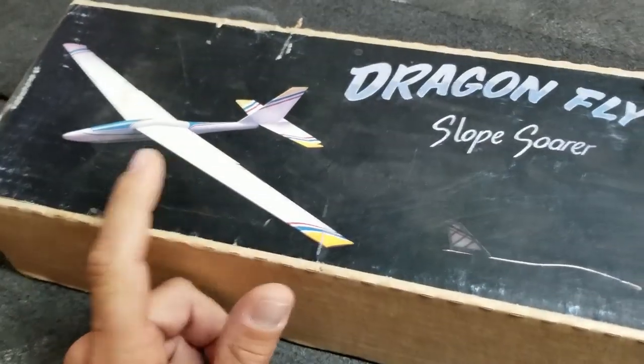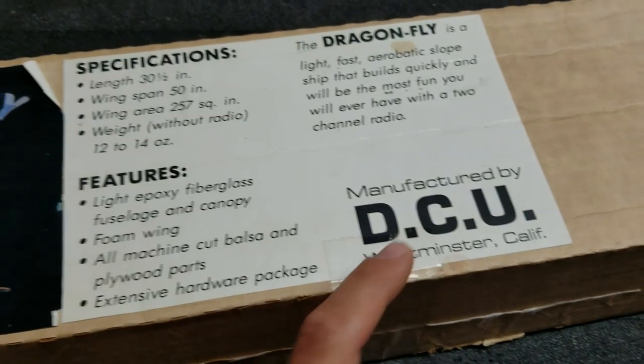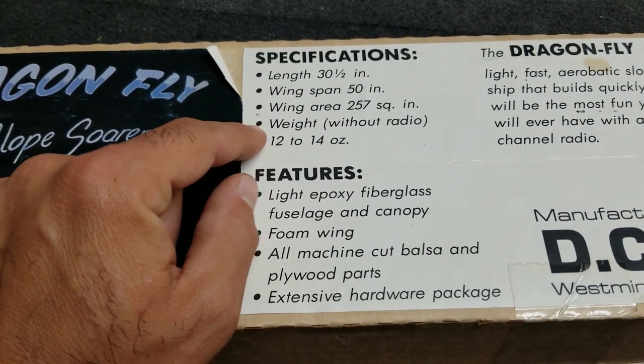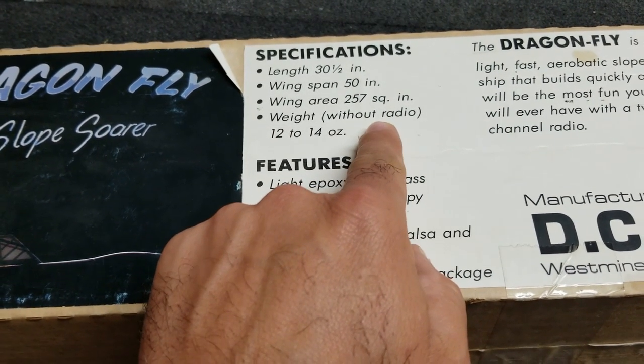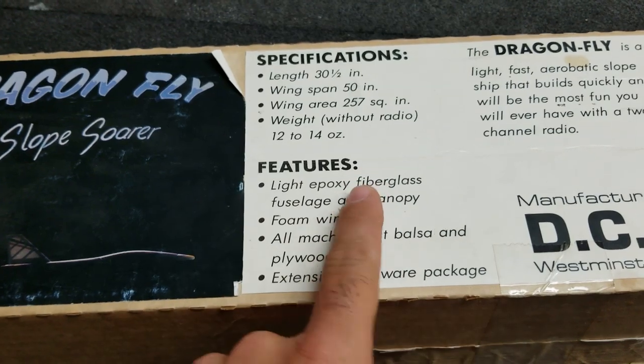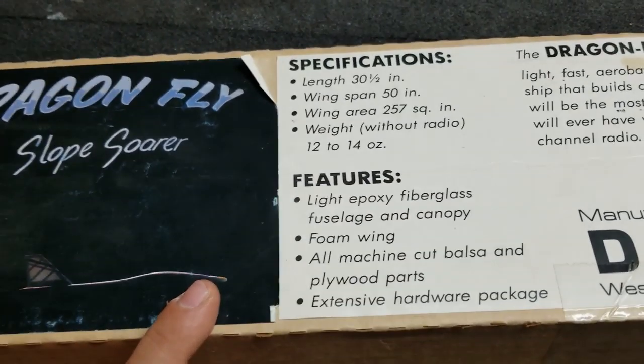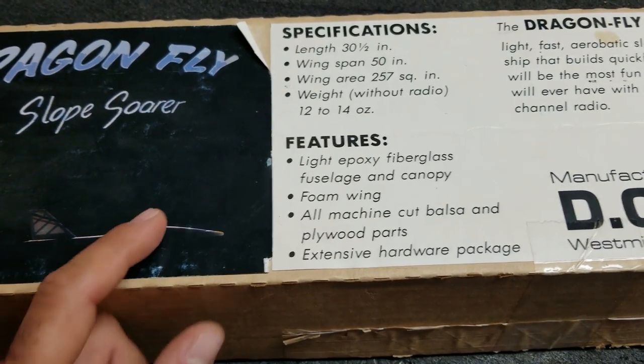I think there were a couple of bigger name manufacturers making 50 inch kits. It says weight here, 12 to 14 ounces without radio. So it doesn't say what it is ready to fly, but it's still pretty light. It wasn't a heavy PSS or power slope scale kind of slope glider.